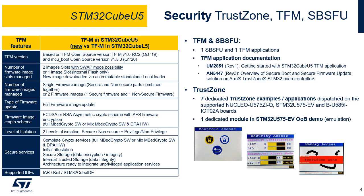The table indicates the main features of the secure boot and secure firmware update application. Dynamic firmware update is supported with two slots and swap capability. An immutable standalone local loader is in charge of downloading the possibly encrypted image. Two levels of isolation are implemented: secure versus non-secure, and privileged versus non-privileged.